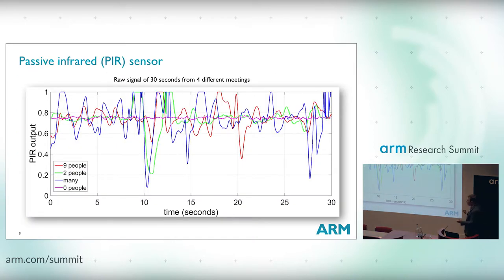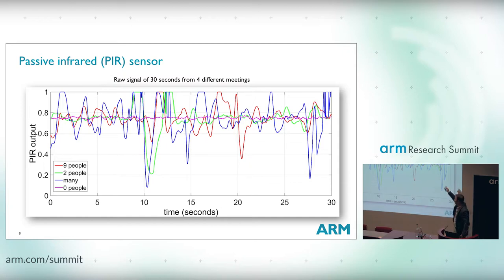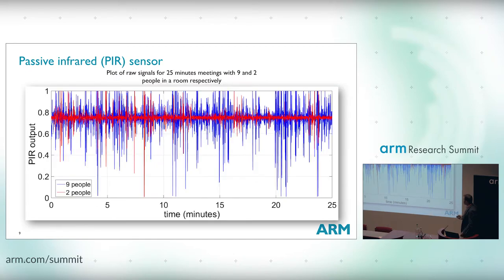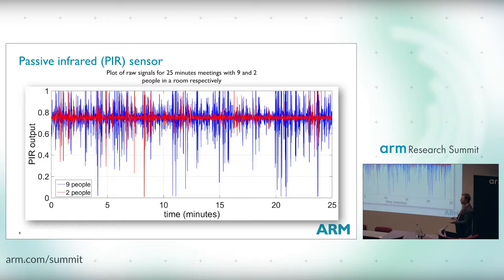Looking at 30 seconds of data: with zero people, the signal (purple) hardly moves. With two people (green), it's nearly stationary with occasional jumps. With nine people, there's more variation, and above nine, even more. Over a 25-minute window, the green signal (nine people) clearly shows more variation than the red (two people). So the general trend is: more variation in the PIR output corresponds to more occupants. The question is how accurately we can quantify this.